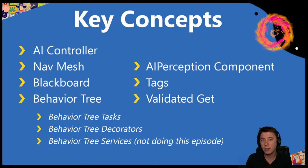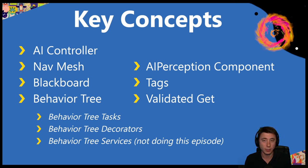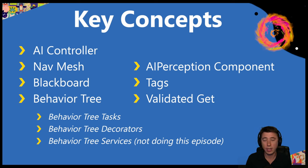The only two concepts here that aren't directly related to AI are tags and the validated get. Tags are just a way of categorizing certain actors or components — so instead of getting all actors of class, you can do it by tag. The validated get is just an easier way to do is-valid checks, which we do a ton of throughout this series. This is a long, detailed episode, but you're going to have all the basics by the end of it.